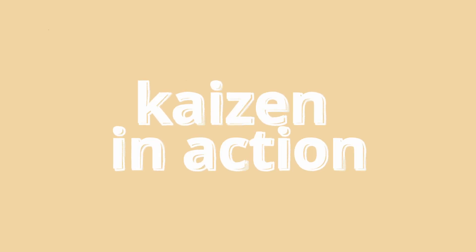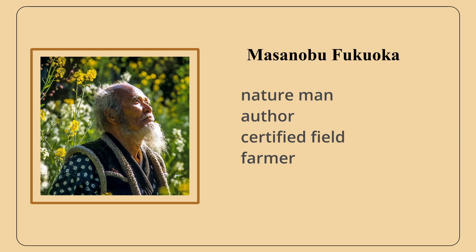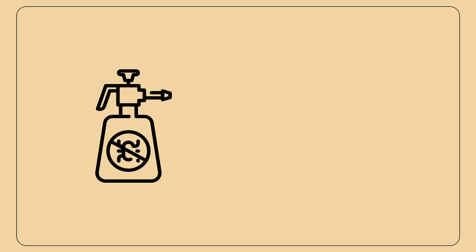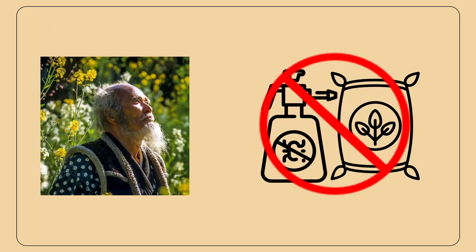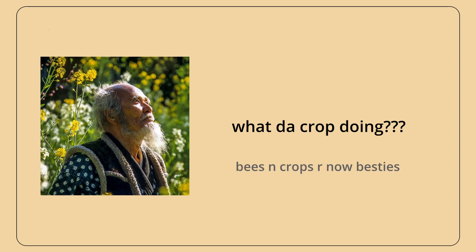Another example of Kaizen in action is the story of the Japanese farmer and author Mansanobu Fukuoka and his struggle with pesticides and fertilizers which damaged the natural balance of his farm and led to decreasing yields. He stopped using any fertilizers or pesticide and instead focused on how his crops grew and how they interacted with the overall ecosystem of the farm.